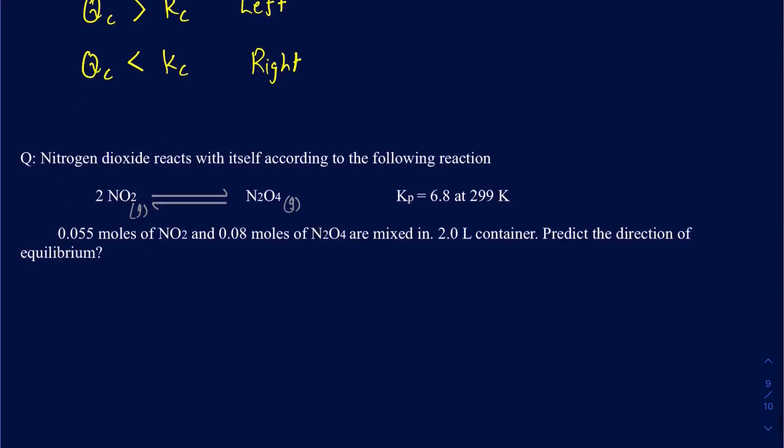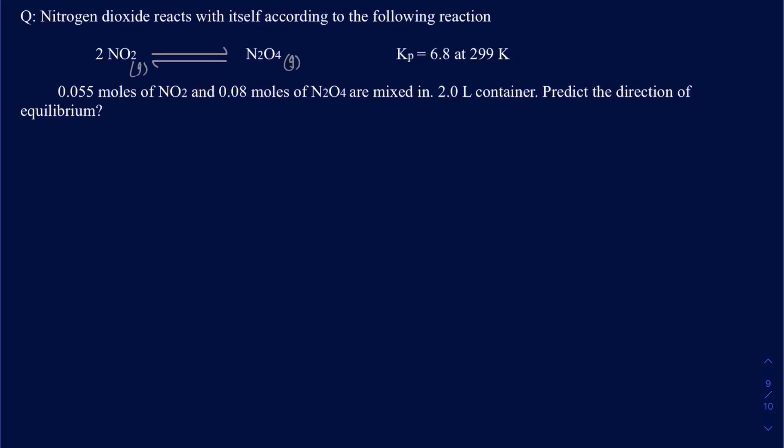Let's take an example here to make things clear. We have the reaction where NO2 reacts with itself to make N2O4, and we're given the Kp expression. But when I look at the question, I'm told I have these moles of NO2 and moles of N2O4 in a 2-liter container. So I'm really dealing with the equilibrium constant in terms of concentration, not pressure. The first thing I want to do is convert this Kp into the Kc.